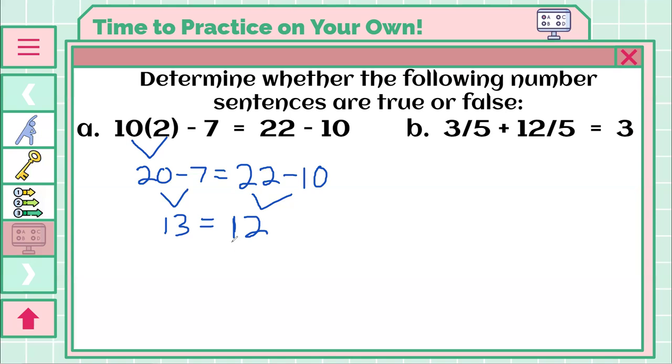From here, if you notice, well these aren't true statements. And if you determined that this is a false number sentence, then you are absolutely correct.